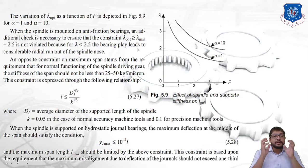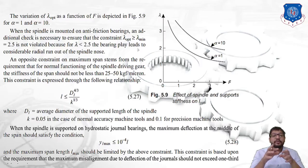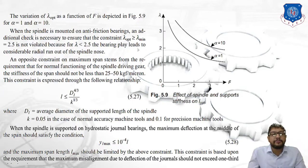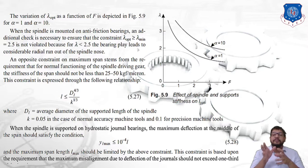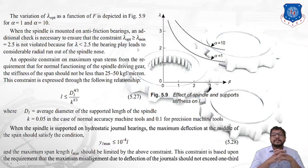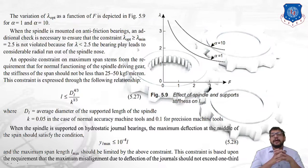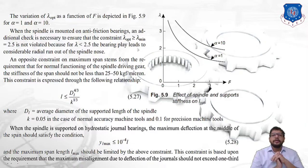An opposite constraint on maximum span stems from the requirement that for normal functioning of the spindle driving gear, the stiffness of the span should not be less than 25 to 50 kgf per micron. This is expressed as L ≤ d_L^(4/3) / k^(1/3), equation 5.27, where d_L is the average diameter of the supported length and k = 0.05 for a normal accuracy machine tool and k = 0.1 for a precision machine tool. When the spindle is supported on hydrostatic journal bearings, the maximum deflection at the middle of the span must satisfy y_L_max ≤ 10⁻⁴·L (equation 5.28), limiting the maximum span length based on the requirement that maximum misalignment due to journal deflection should not exceed one-third of the bearing clearance.